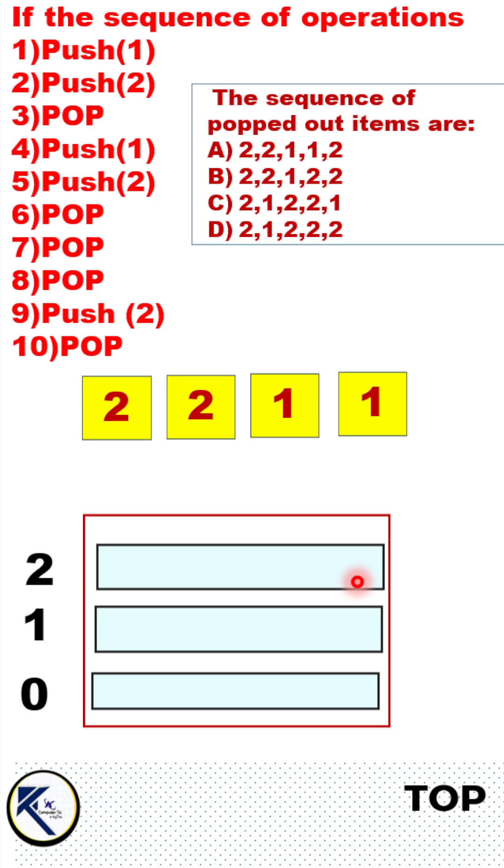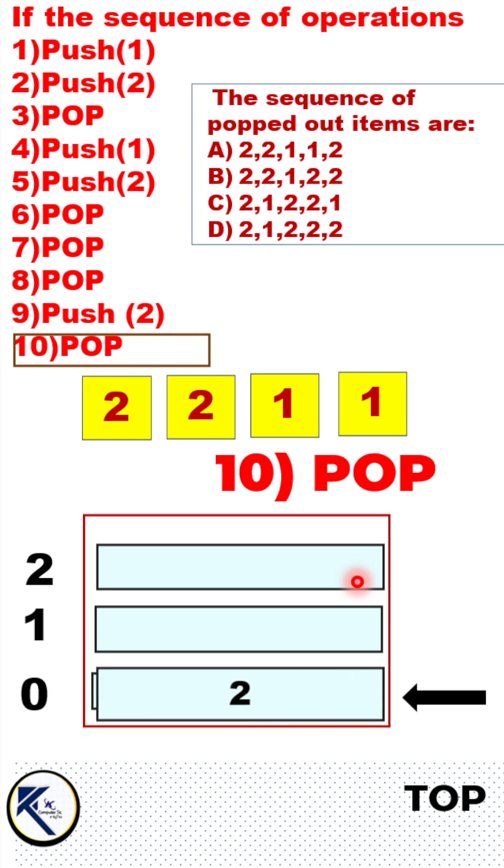But however our ninth operation is push. So increment and add the element. Tenth operation is pop. So there is only one element, it will be removed from the stack.